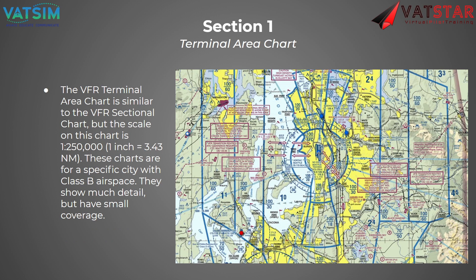On top of the sectional chart, we also have the terminal area chart. These are designed more for cities and have a smaller scale — about 1 inch to 3.5 nautical miles. These are used near large cities that have Class Bravo airspace, and they're designed to have much more detail, blowing everything up to a larger scale so that you can more easily see detail and the prominent features of a general area. You'll use these when navigating around those larger cities.